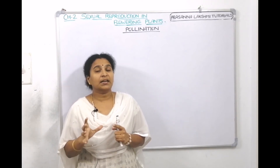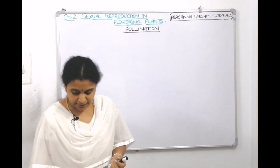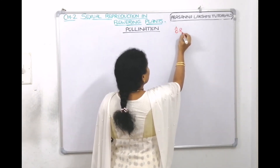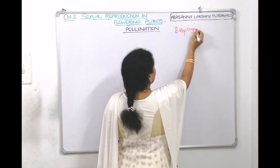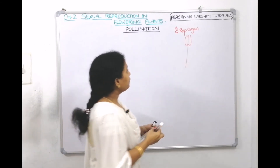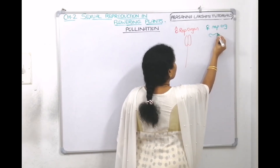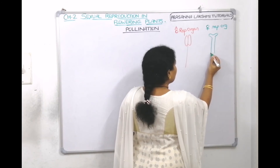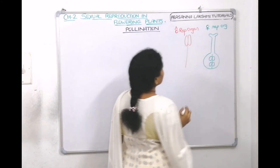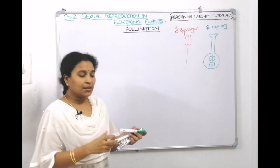The flower contains a male reproductive organ and a female reproductive organ. The male reproductive organ is called the stamen, and the female reproductive organ is called the pistil. The pistil, or carpel, contains the stigma, style, and ovary, which contains ovules.